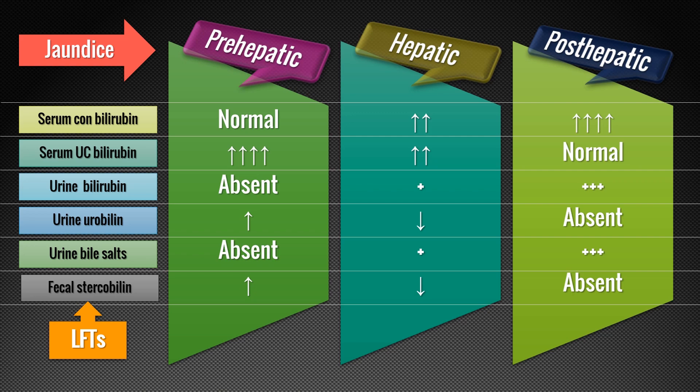These are the liver function tests based on excretory functions of the liver. We can also differentiate the three types of jaundice based on enzyme tests, which I will explain in future videos. In the next video, I am going to explain tests based on synthetic functions of the liver — specifically plasma proteins and prothrombin time. Thank you for watching.